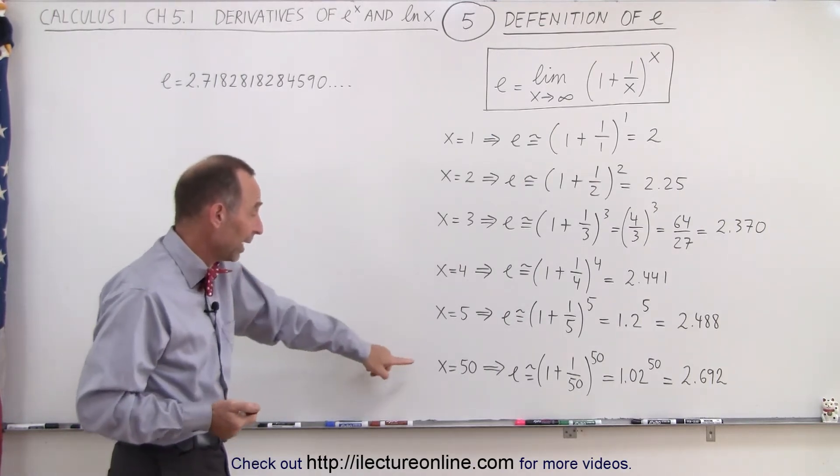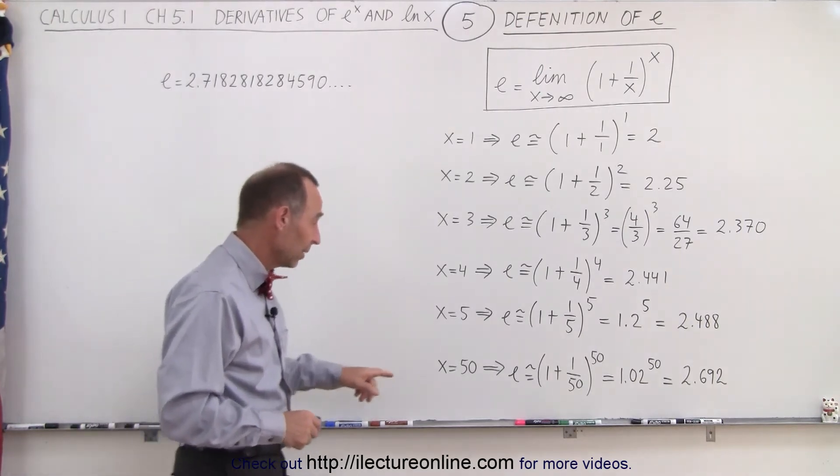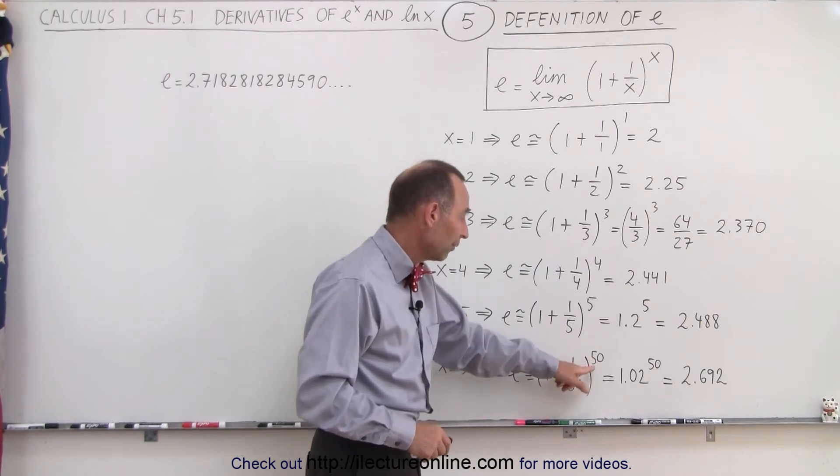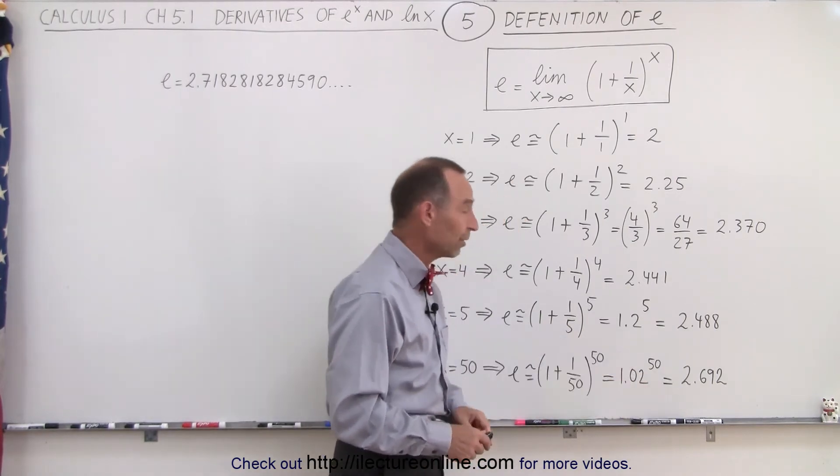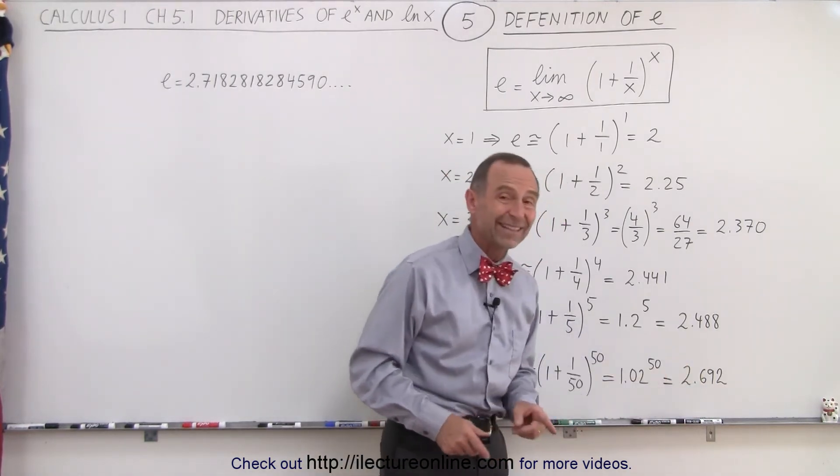So what happens when x becomes 50? Now you think, now I'm getting really close, but that's still not the case. Because now you get 1 plus 1 over 50, all of it raised to the 50th power, which is the same as 1.02 raised to the 50th power. When you calculate it, you very quickly discover that it's 2.692.